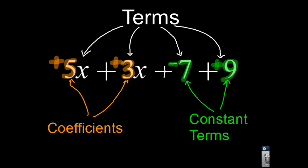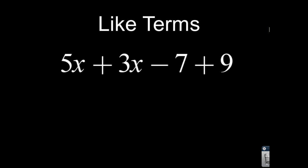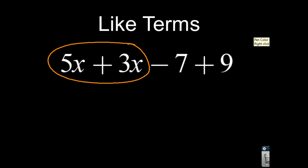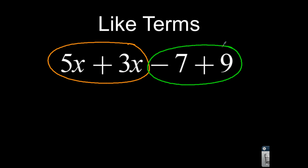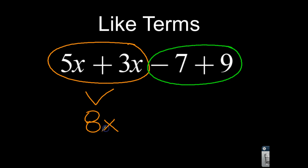Now, when we go ahead and combine these things, we're going to combine our like terms. We're going to identify the parts that are the same. These are both variable terms with the same variable, and these are both constant terms, so we're going to combine those together. 5x and 3x together — if I go up 5x and add another 3x — that makes 8x. And I have negative 7 plus 9: down 7, up 9 — that's going to give me a positive 2.